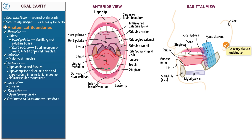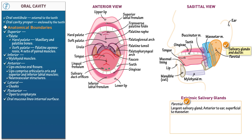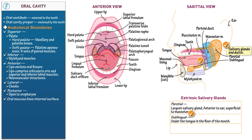Three sets of paired extrinsic salivary glands surround the oral cavity. The parotid gland is the largest and lies in the side of the face, anterior to the ear and superficial to the masseter. The parotid gland drains saliva into the mouth via the parotid duct, which is easily visible during dissection given its relatively large diameter and long length as it passes superficially over the masseter. The sublingual gland lies beneath the tongue in the floor of the mouth and secretes saliva across this lining via several small ducts.